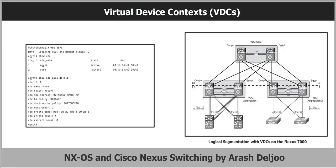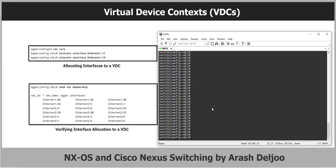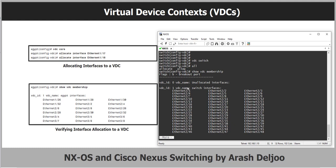Once the VDC is created, you need to assign physical interfaces to it depending on the Ethernet module installed. This example demonstrates how to allocate interfaces to a VDC. The command is easy — under the VDC context, use 'allocate interface' followed by the interface name, for example interface 2/1. For verification, use the 'show vdc membership' command.